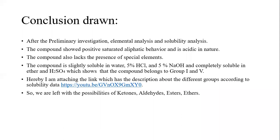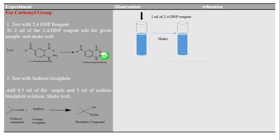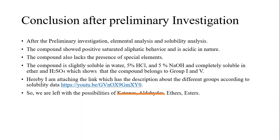We will first test for ketones and aldehydes, together called carbonyl compounds, using the 2,4-DNP reagent test. We have the carbonyl compound react with 2,4-dinitrophenylhydrazine, which converts to a 2,4-dinitrophenylhydrazone with an orange or yellow color. Here we are not getting an orange or red precipitate, so the carbonyl group is absent. We also test carbonyl group presence with sodium bisulfite — dissolve the sample in 3 mL of sodium bisulfite solution and shake; a white precipitate indicates carbonyl presence. Since no precipitate formed, the possibilities of ketones and aldehydes have been ruled out.